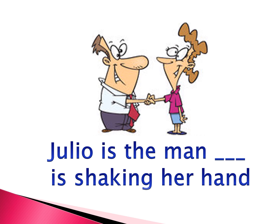Julia is the man who is taking her hand. So I'm speaking about Julia, who is a person, and then I have a verb after it. So who is shaking her hand? Julia is the man who is shaking her hand.